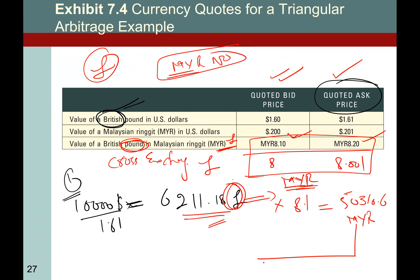Now convert back these Ringgits into dollars. You have the Malaysian Ringgit and the rate is also in Malaysian Ringgit. You want to sell those Malaysian Ringgit, so you will be given the bid price, which is 0.2 dollar per Malaysian Ringgit. We multiply by 0.2 and the answer is $10,062.1.